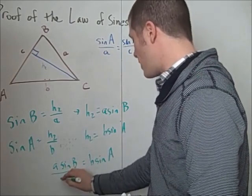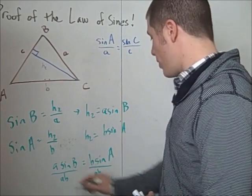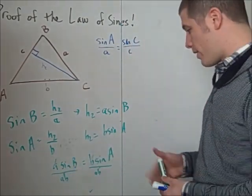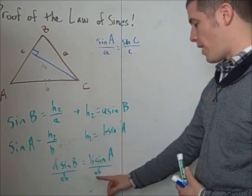And then divide both sides by the product of a and b. Here the a's cancel, and here the b's cancel. So I have the sine of B over b equals the sine of A over a.